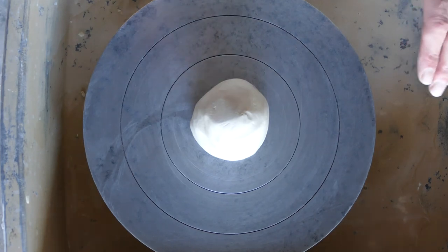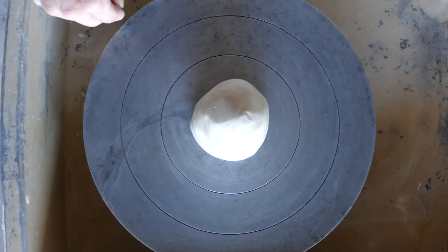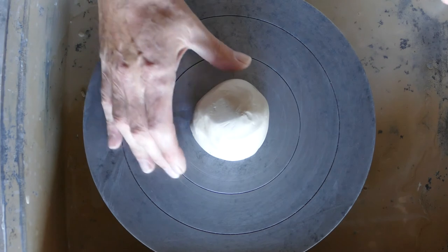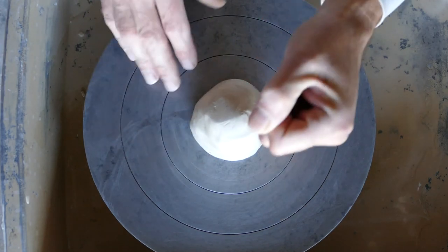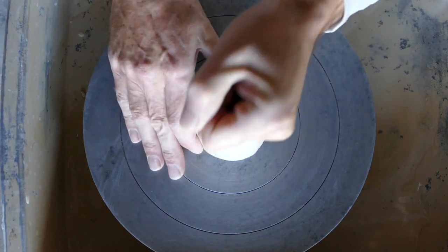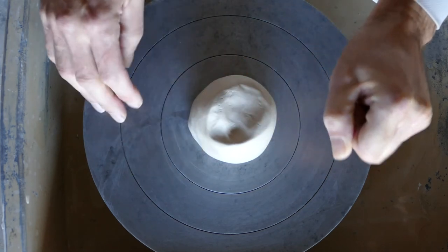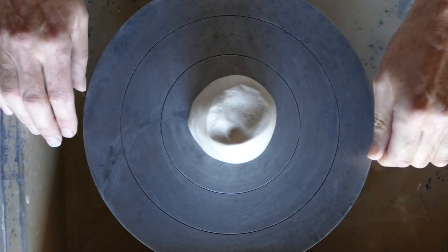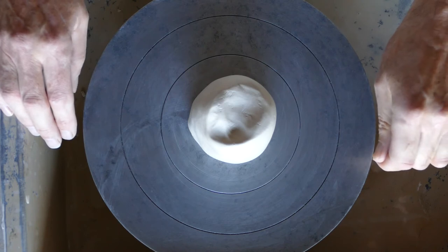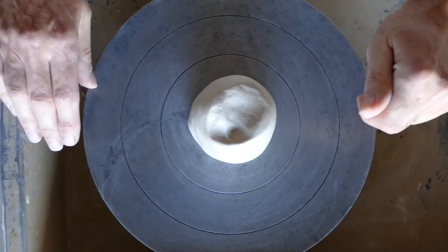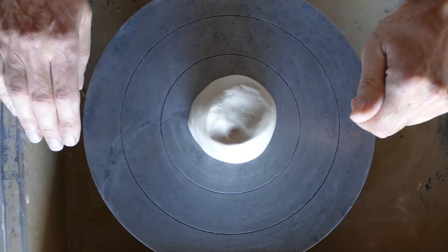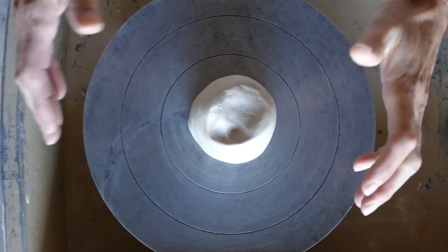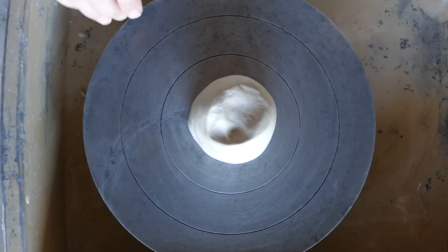So now we want to fix the clay actually to the wheel. How do we do that? Well, we just give it a couple of taps on the top and that will hold it pretty securely. Obviously if you don't tap it hard enough it won't be fixed to the wheel, and if you tap it too hard you don't want to distort it too much that you really put it out of center.